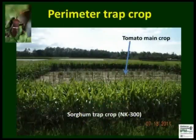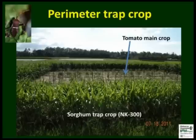Here is a photo of a perimeter trap crop demonstration aimed at reducing leaf-footed bug damage in tomatoes. In this case, all four sides around the main crop were planted to NK300 variety of forage sorghum. The pest is attracted to the head or panicle of sorghum planted two weeks before the main crop.